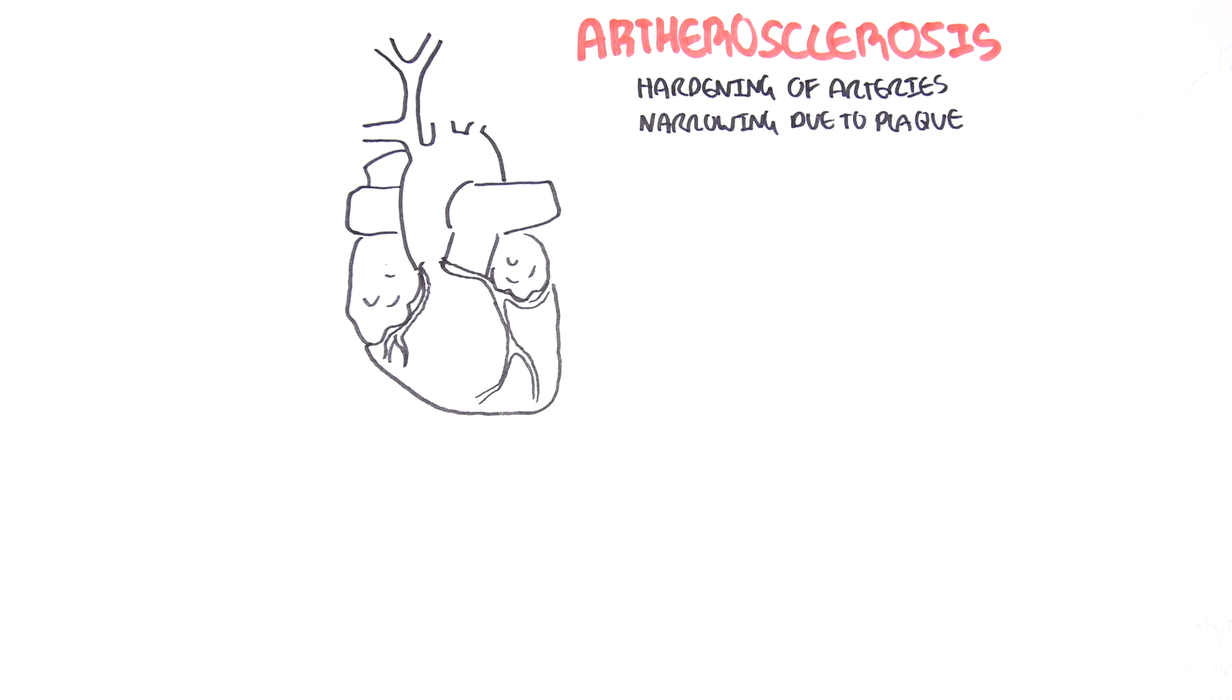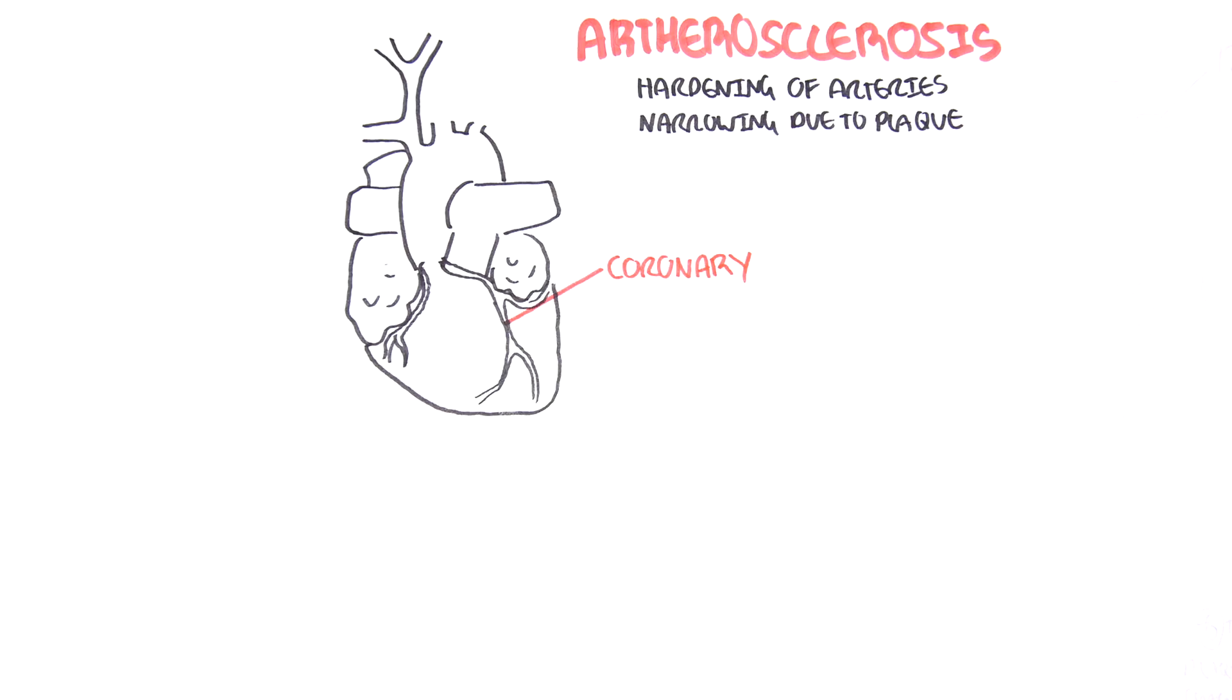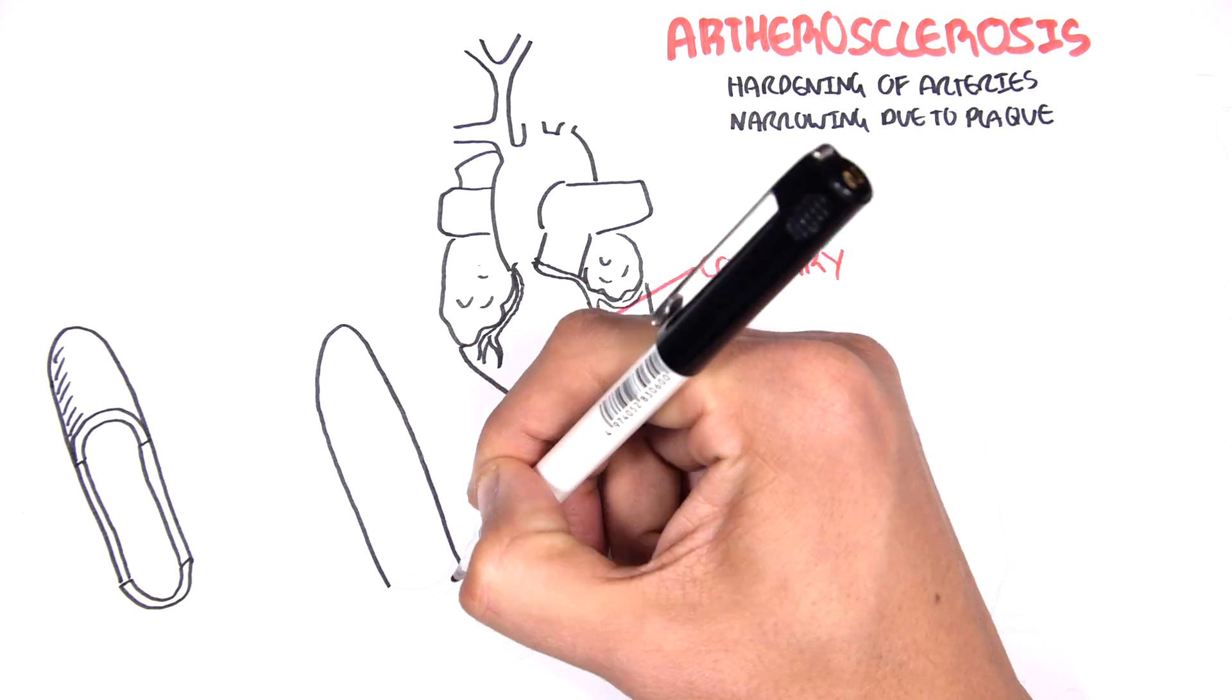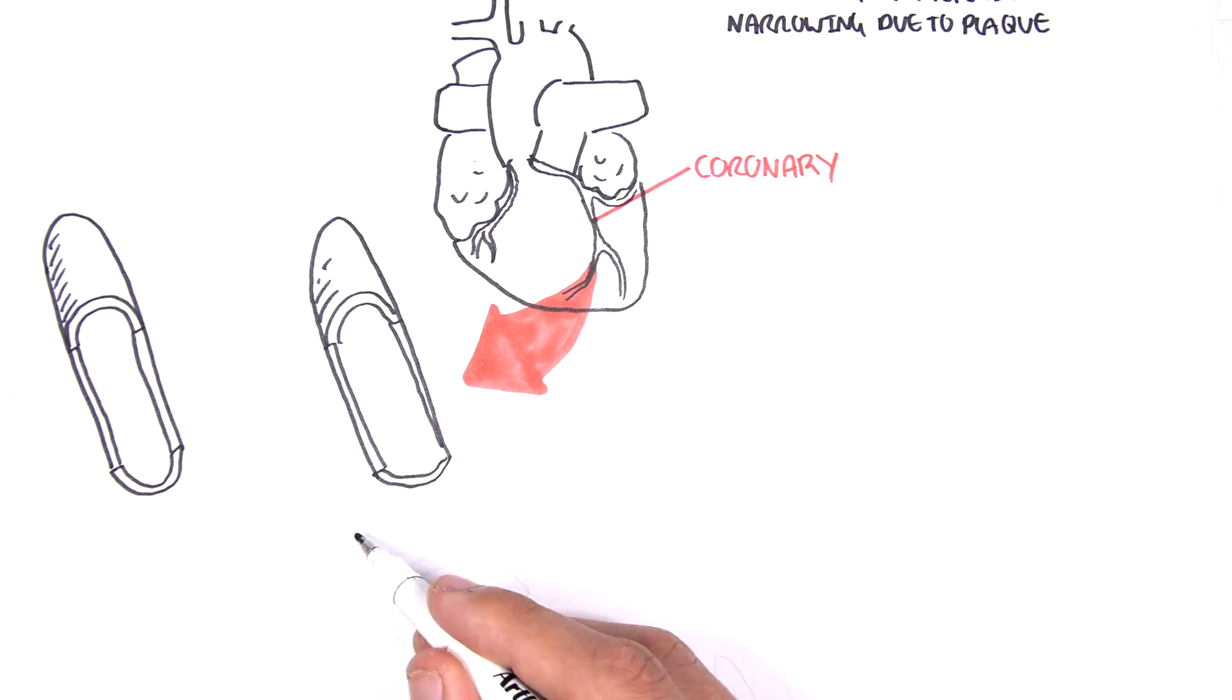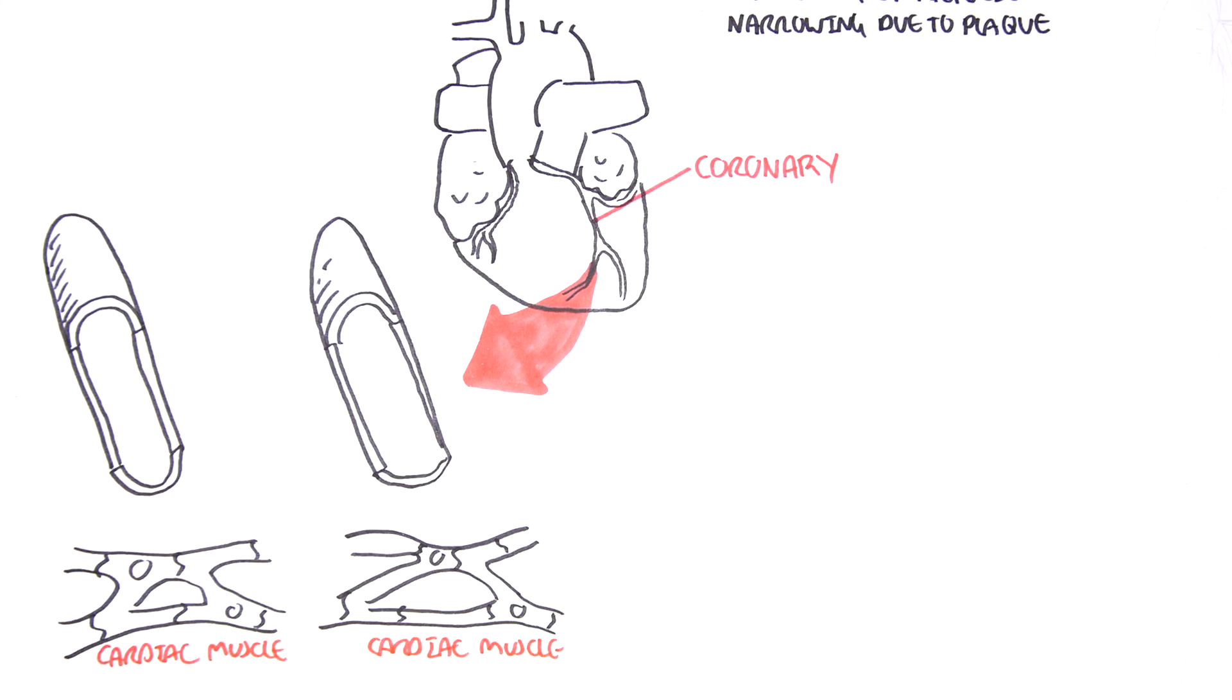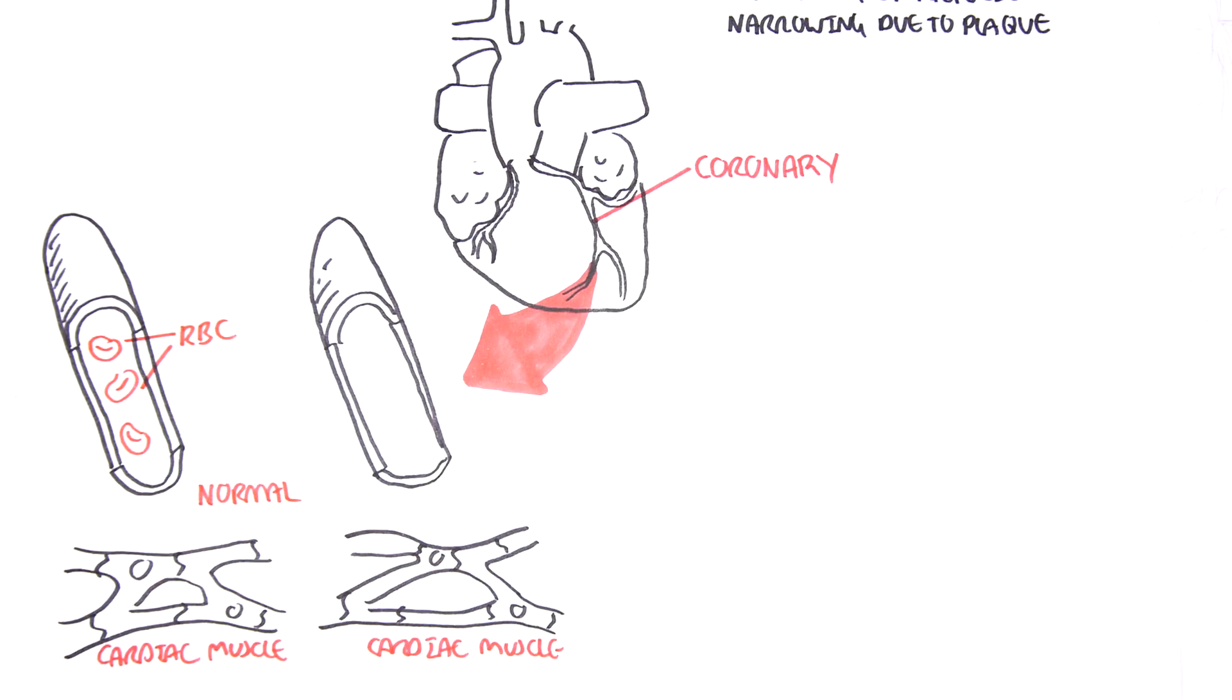So if here I'm drawing the heart, we have blood vessels called these coronary arteries that supply the heart with oxygen. Let's take a look at two different scenarios. Here are vessels and here are cardiac muscle cells. Normally the vessels are carrying blood full of oxygen to the cardiac muscle cells, thus allowing the cardiac muscle cells to function normally, which means the heart will function normally.